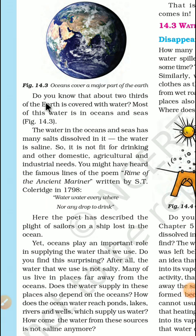Do you know that about two-thirds of the earth is covered with water? However, most of this water is in oceans and seas. Apari jo puri earth hai, uske two-third part mein water hai — means 66% part mein water hai. Land toh sirf 33 se 34% mein hi hai; baaki toh sab jagah pe paani hai.